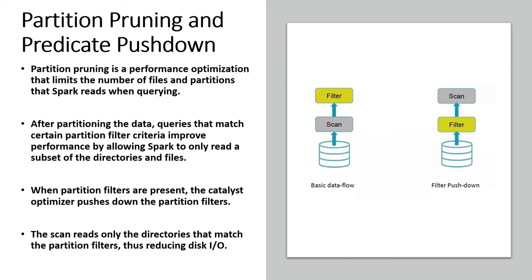Because the data is already partitioned on that key, Spark will only read the data under that specific folder. This makes the entire operation faster since we now only read a limited set of data and then apply the filtering on top of that — compared to the basic flow where we scan the entire dataset first. This concept of filtering data before the full scan is called partition pruning and predicate pushdown.